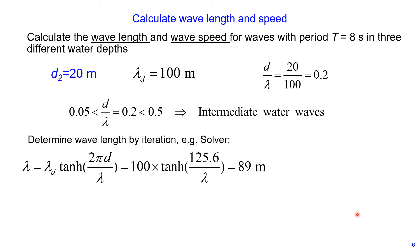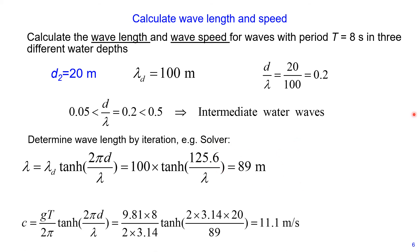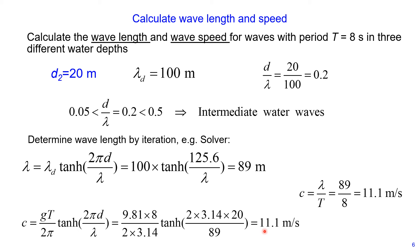Calculating the wavelength, we obtain 89 meters. For wave speed, we also use the full equation, though we don't need to use iteration here, and we obtain wave speed as 11.1 meters per second.